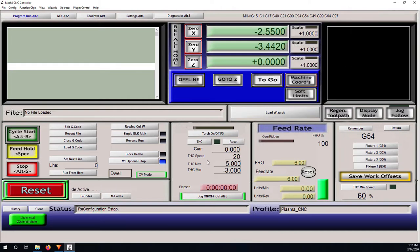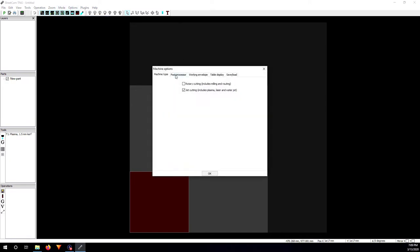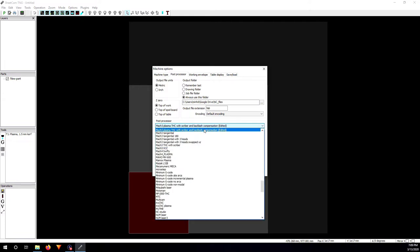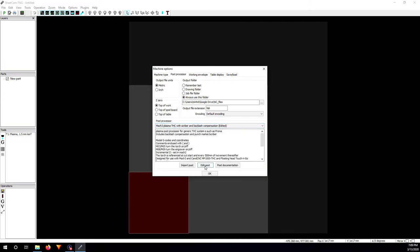That's it for Mach3. Let me show you SheetCAM. I downloaded the demo version of SheetCAM, so it can only do like 180 lines of code. Go to options, machine, go to post processor. To configure the floating head setup, you have to use the Mach3 Plasma THC with scriber and backlash compensation for post processor. Click on this, choose this, and then do edit post.